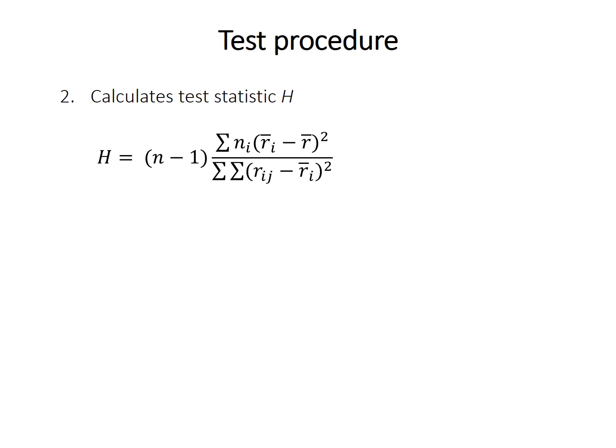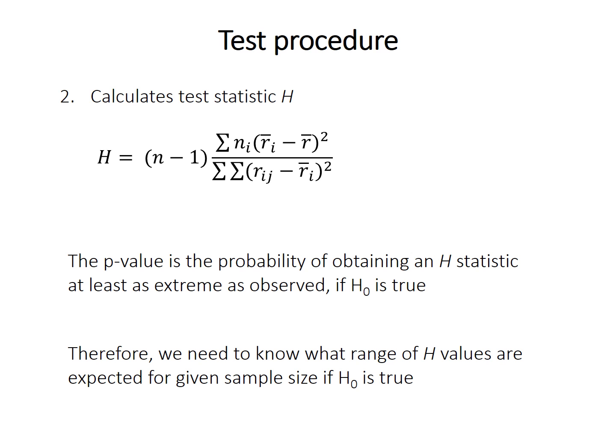The signal is essentially the between-ranks mean square, and the within-ranks mean square. To calculate the p-value, we need to know the probability of observing an H statistic at least as extreme as we did if the null hypothesis is true. So we need to know the expected distribution of H statistics for a given sample size when H0 is true.